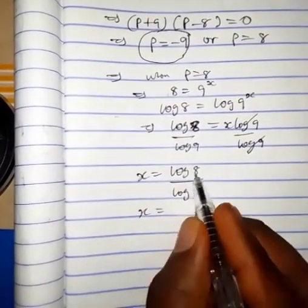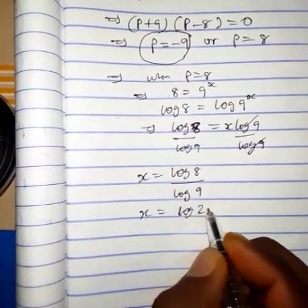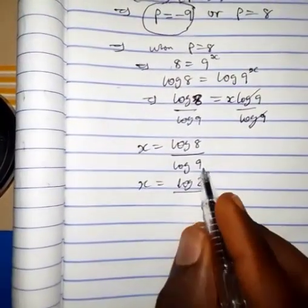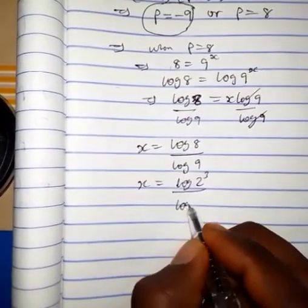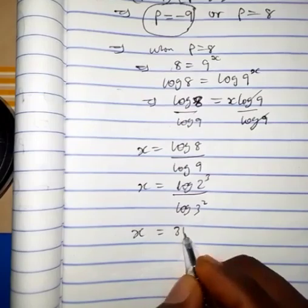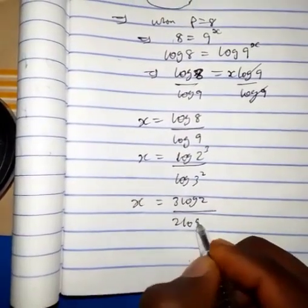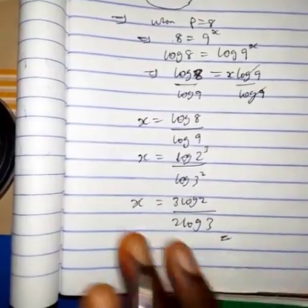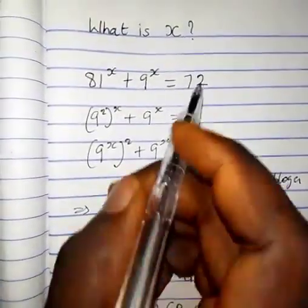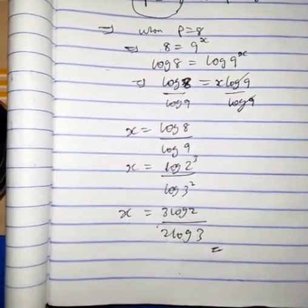We can write 8 as 2 raised to the power of 3, so we have log 2 to the power of 3. And 9 can be written as 3 squared, so we have log 3 squared. This gives us 3 log 2 over 2 log 3. Therefore, our value for x in this exponential equation is x equals 3 log 2 over 2 log 3.